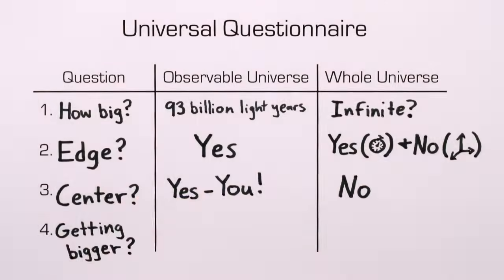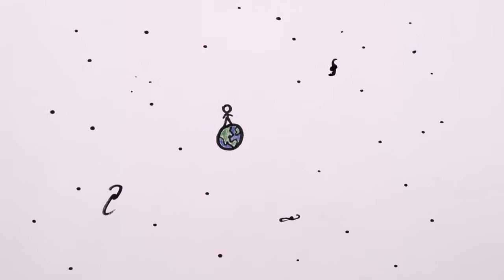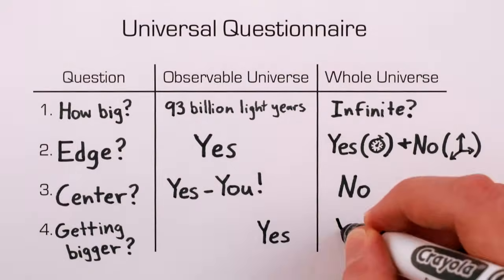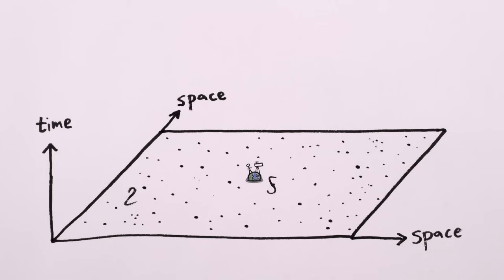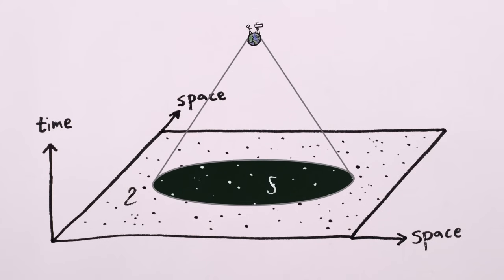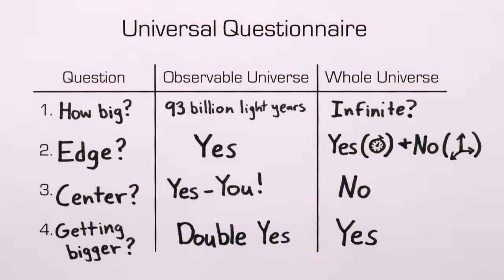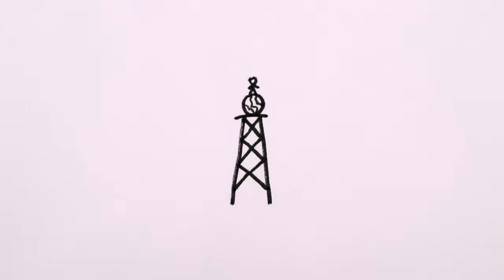And is the universe getting bigger? Yes. Space is expanding, which makes both the observable universe and the whole universe bigger. Plus, over time, we see older and older light coming from farther and farther away, so our observable universe gets bigger that way, too. And that, in a nutshell, is our view from the tower.